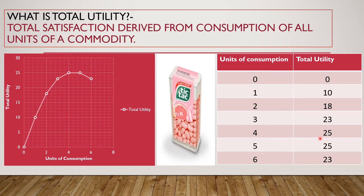After the fifth unit, I still get a satisfaction of 25 utils. And after the sixth unit, the total utility has decreased from 25 to 23 utils. This table can be called the total utility table or total utility schedule — another word for table is schedule.